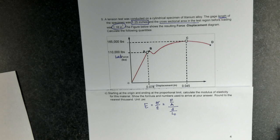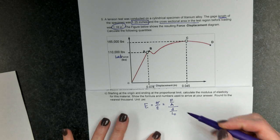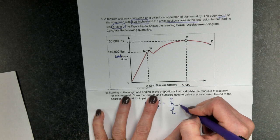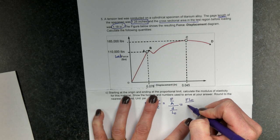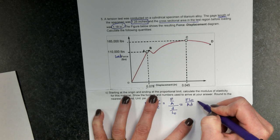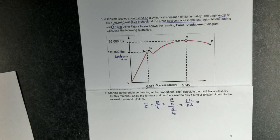So, multiplying by the reciprocal, because I have a fraction divided by a fraction, this leads me to force times the original length equals the area times the displacement. That's going to be the formula that I will use.